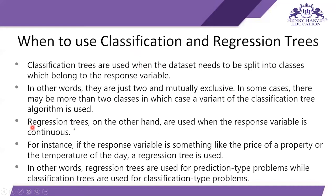Regression trees, on the other hand, are used when the response variable is continuous — for instance, the price of a property or the temperature of the day. In summary: regression trees are used for prediction-type problems where we predict a continuous value, while classification trees are used for classification-type problems where we assign a class label.